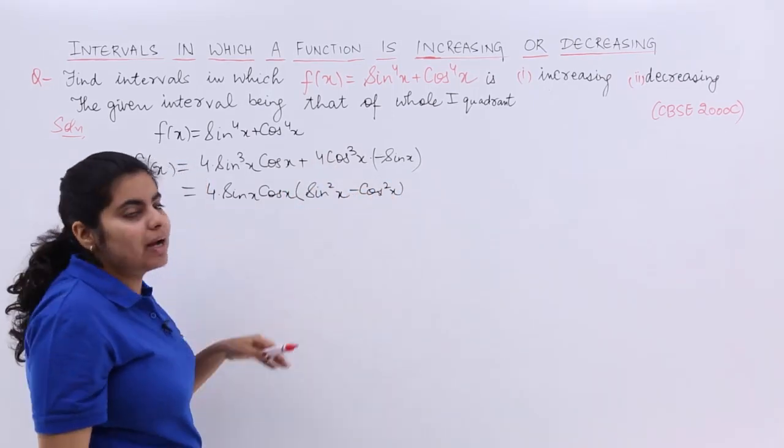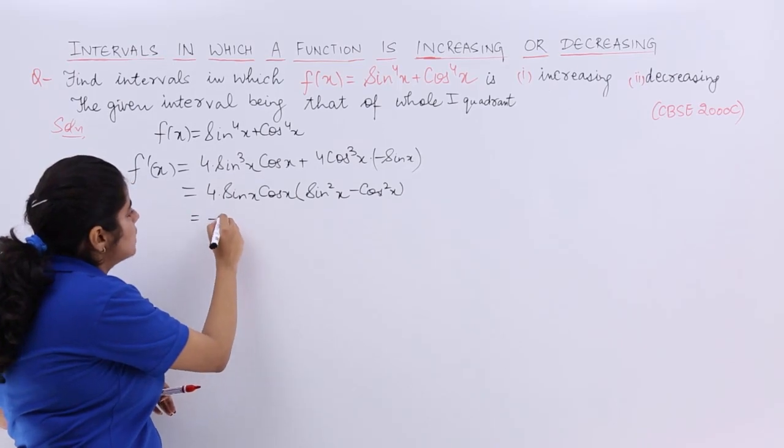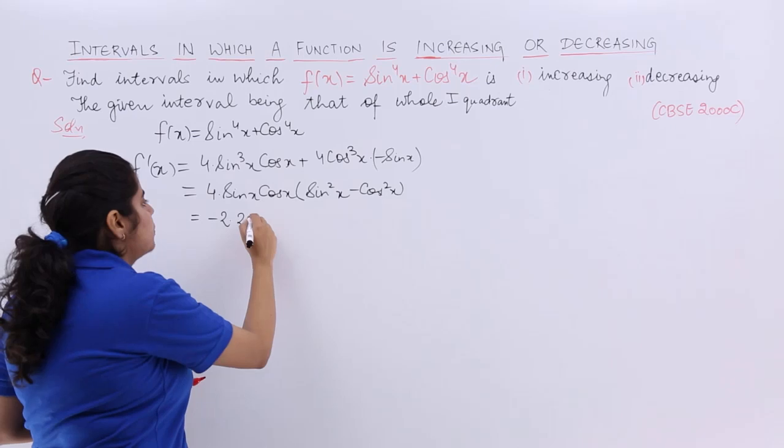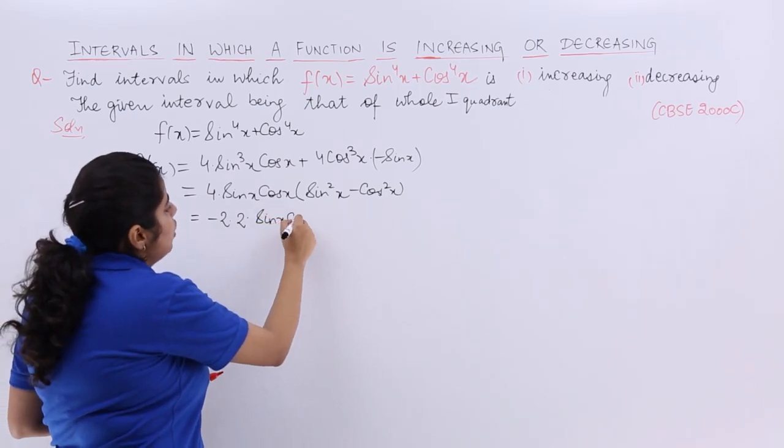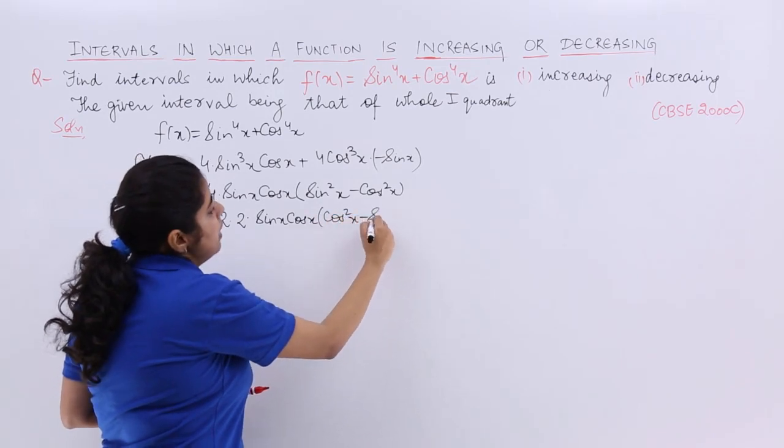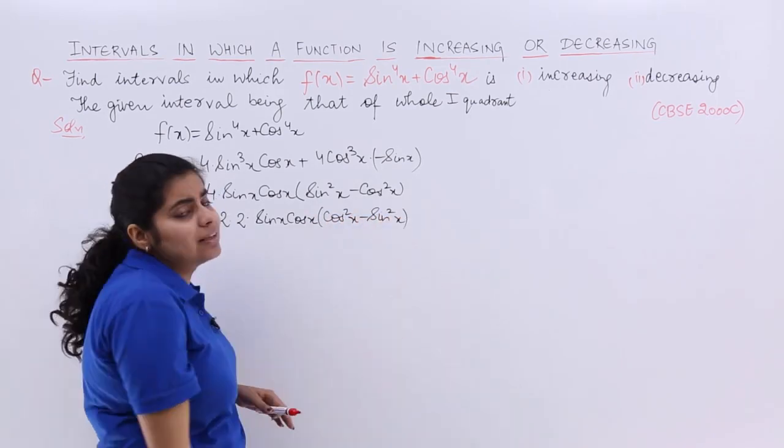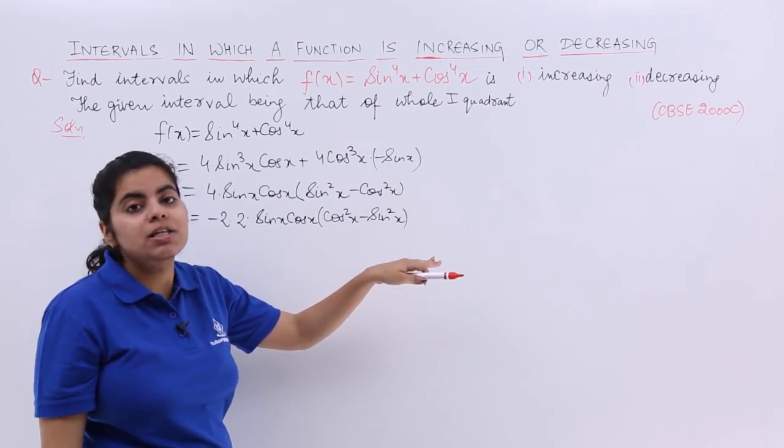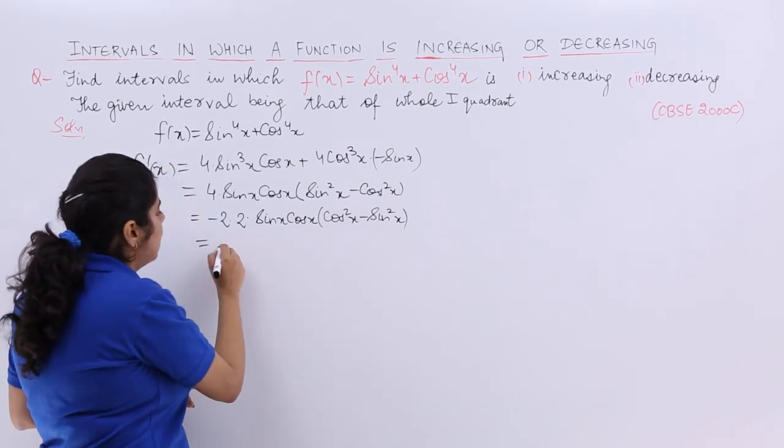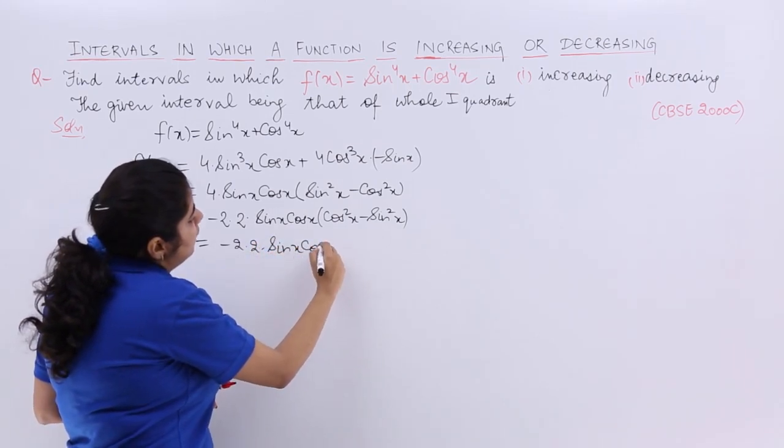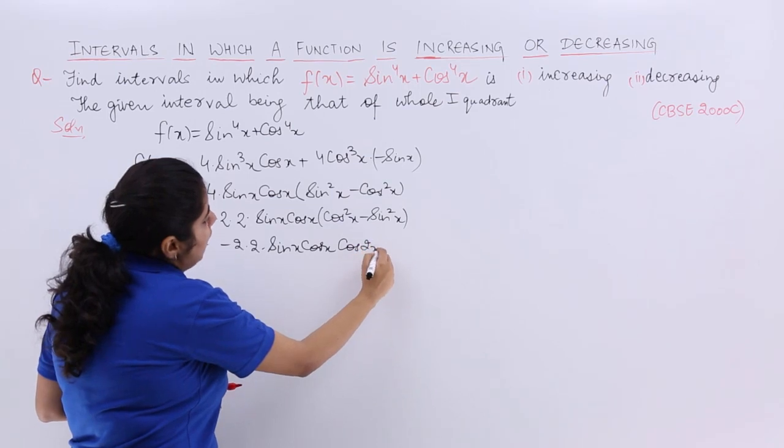Inside you have sin(x) - cos(x). If you take minus common, it becomes -2·2·sin(x)·cos(x)·(cos^2(x) - sin^2(x)). Why have I done this? Because cos^2(θ) - sin^2(θ) = cos(2θ), which is a formula. So it becomes -2·2·sin(x)·cos(x)·cos(2x).